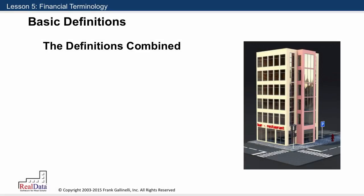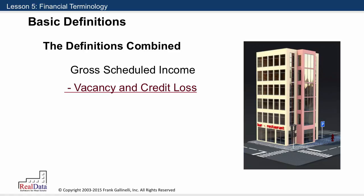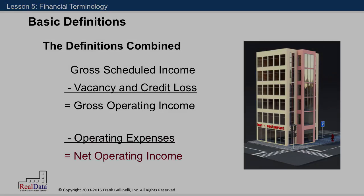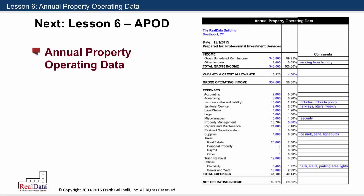Let's wrap up this collection of definitions. We start with the top line, which is gross scheduled income — all of the income you might potentially get from the property, including both currently occupied units and potential rent from vacant units. You subtract what is lost to vacancy and to credit, and that gives you the gross operating income. Then you subtract all the operating expenses, and that gives you the net operating income. That's the basis for our profit and loss statement, our APOD form, which is what we'll take a look at in our next session.